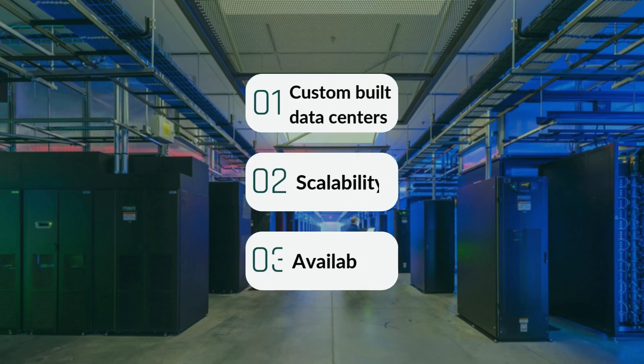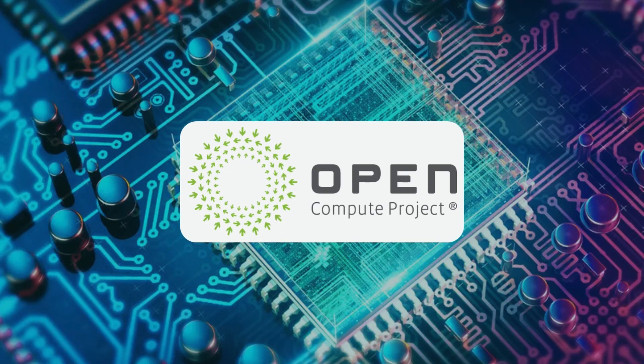Facebook operates on a robust infrastructure, primarily relying on its custom-built data centers. These facilities are designed to optimize energy consumption while providing high availability and scalability. By leveraging the OpenCompute project, Facebook develops its own hardware, which ensures efficiency in handling billions of user interactions daily — keeping posts, photos, and videos at your fingertips without any delay.